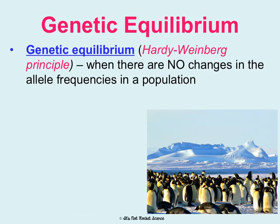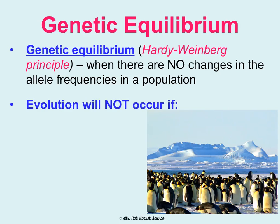Evolution is not always necessarily happening. If it wasn't happening, we would say that a population is in genetic equilibrium. There's a lot of math that goes with this — it's called the Hardy-Weinberg principle, which is covered with the honors students but not here. Genetic equilibrium is when there are no changes in the allele frequencies of a population, meaning that evolution is not occurring. But there are five things that have to be true in order for evolution not to happen and for a population to be in genetic equilibrium.